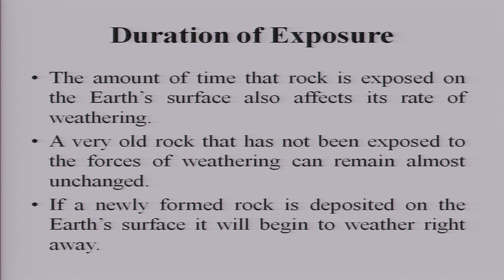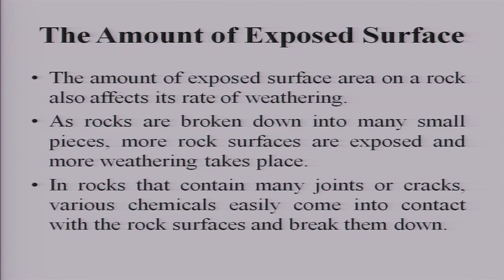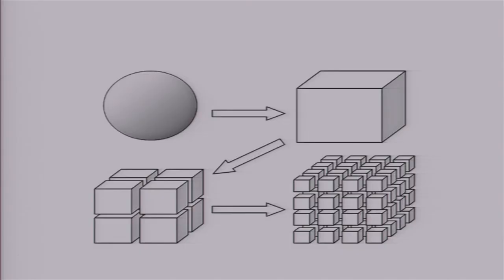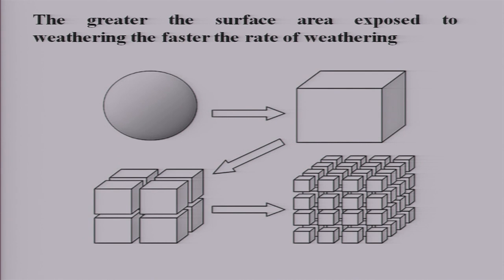An old rock that has not been exposed to forces of weathering can remain almost unchanged, while a newly formed rock deposited on the earth's surface will begin to weather right away. Third, the amount of exposed surface — you must have seen that we cut vegetables into smaller pieces to cook them faster. Similarly, as rocks are broken down into smaller pieces, more rock surfaces are exposed and weathering takes place faster. If there are joints and cracks, more weathering will occur because water can move through these cracks.